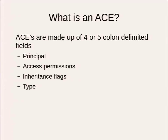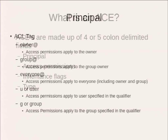An access control entry is made up of four or five fields. The first part is called the principal, which describes the owner and who the ACL is granted for. The second part is the access permissions. The third part is the inheritance flags. The fourth is the type. I will break these down one at a time.